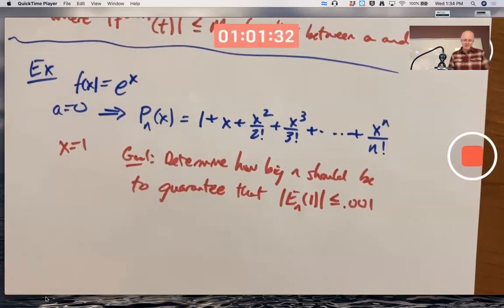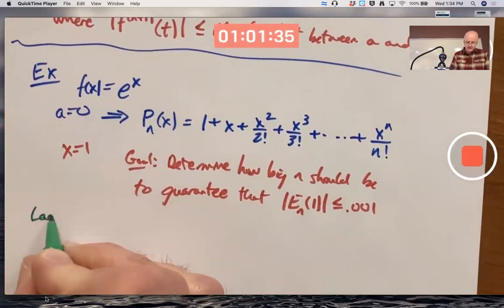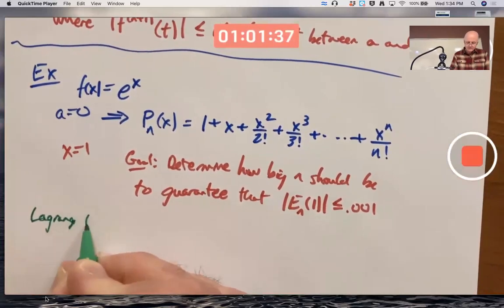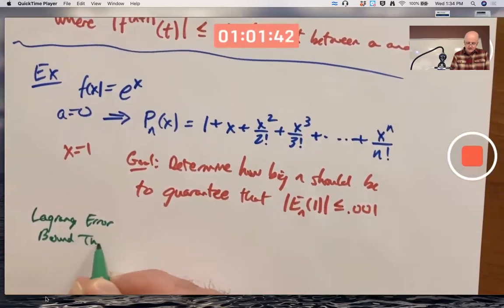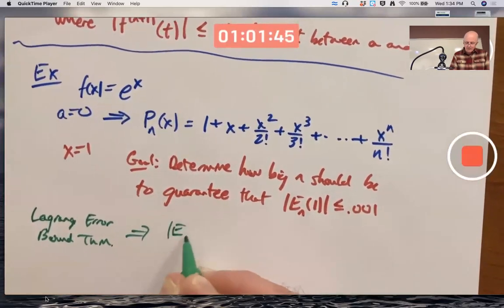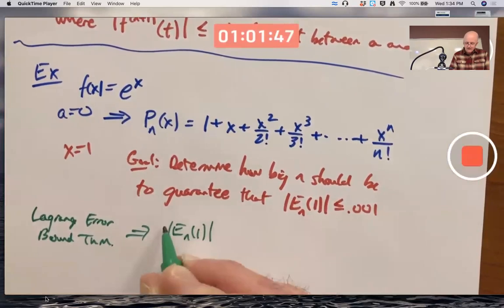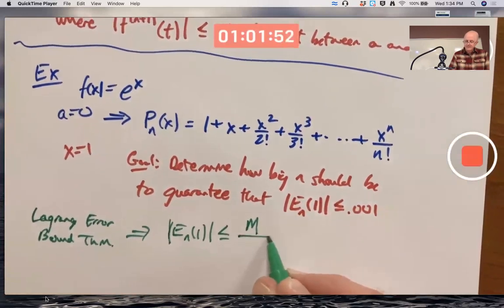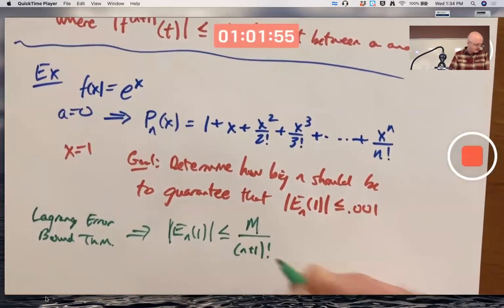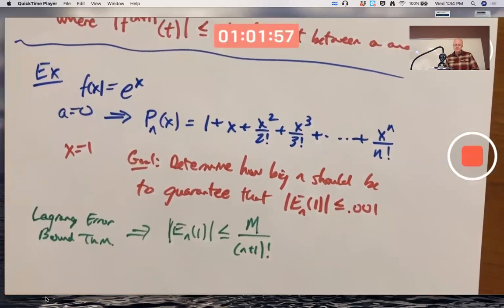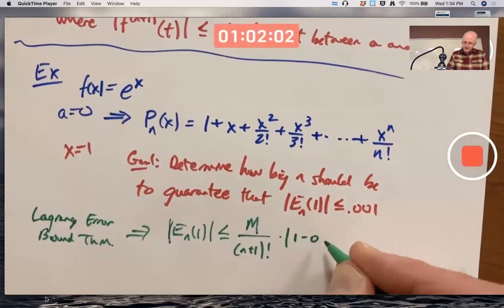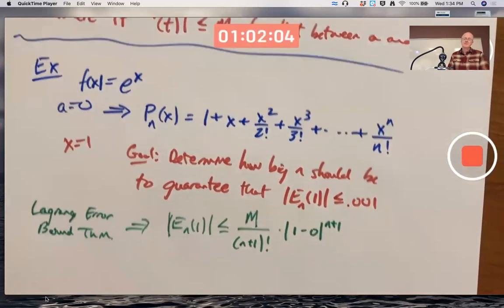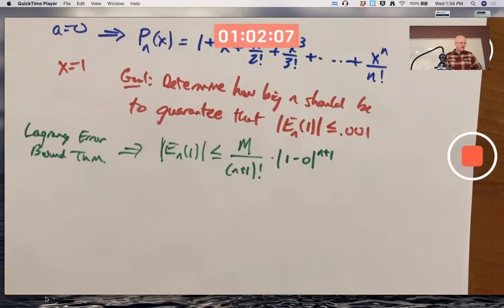The inequality in the theorem, this Lagrange error bound theorem, implies that e_n of 1 in absolute value is going to be less than or equal to some number capital M divided by n plus 1 factorial, that's what the theorem says, times the absolute value of x, which is 1, minus a, which is 0, to the n plus 1 power. I'm just writing down the conclusion of the theorem there, the inequality.